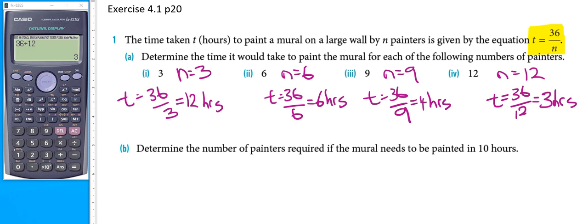Part 2: Determine the number of painters required if the mural needs to be painted in 10 hours. In this particular case, t is equal to 10. So our equation, t equals 36 over n, becomes 10 equals 36 over n.